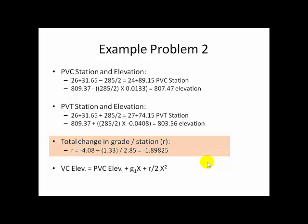Here we have a minus 4.08%. And from that we subtract a positive 1.33%. And divide the whole thing by 2.85. 2.85 is the number of stations. Recall that the 285 foot curve, once we divide it by 100, is 2.85 stations long.